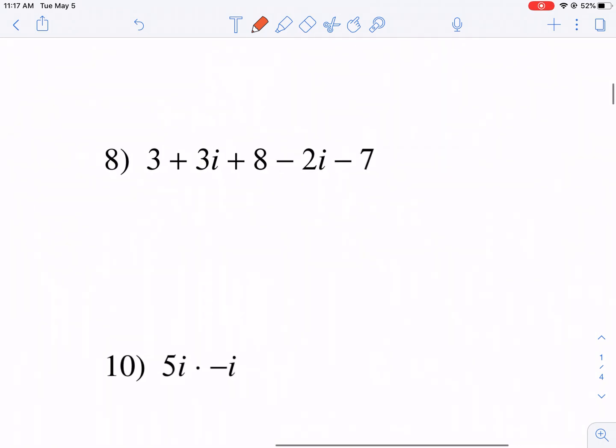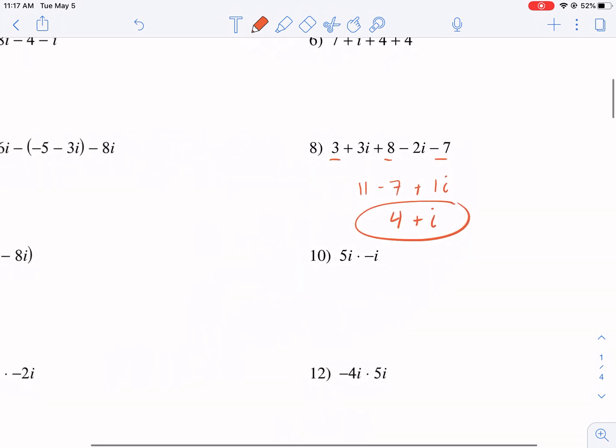Let's go to some harder ones. So maybe down here, real part, real part, real part, 8 + 3 is 11 minus 7 + 3i minus 2i is one i. So then we have 4 + i, and that's how we do that one.